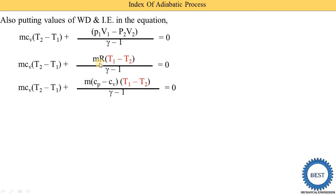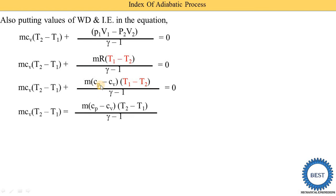Next, we substitute the value of R. Instead of R, we write Cp minus Cv, so the expression becomes M·(Cp − Cv)·(T1 − T2) upon (gamma − 1). All other parts of the equation remain the same, and instead of R we can write Cp minus Cv. Then we do further modification in this equation.